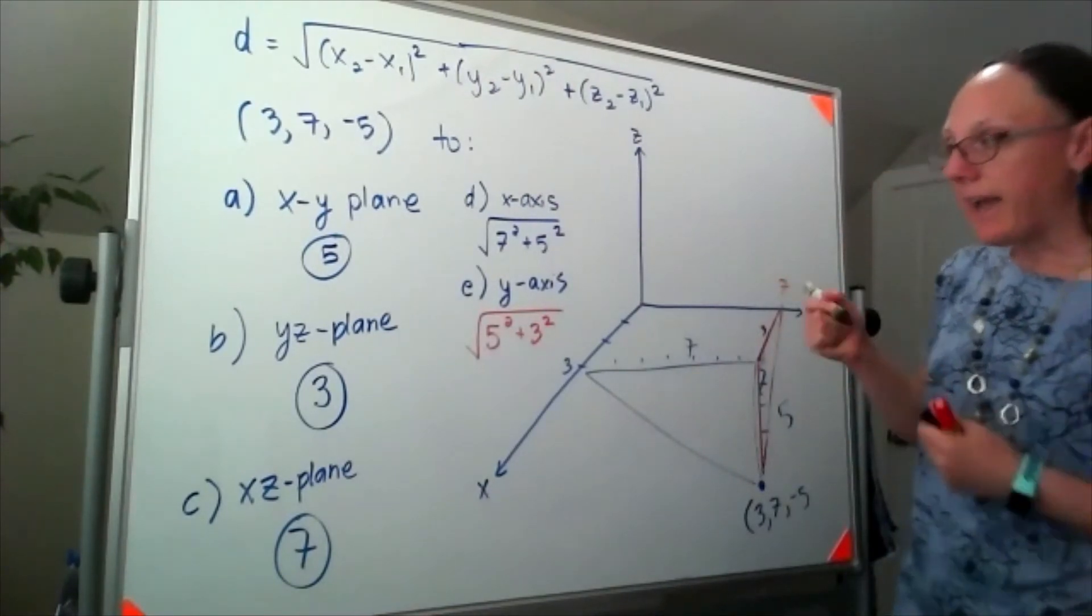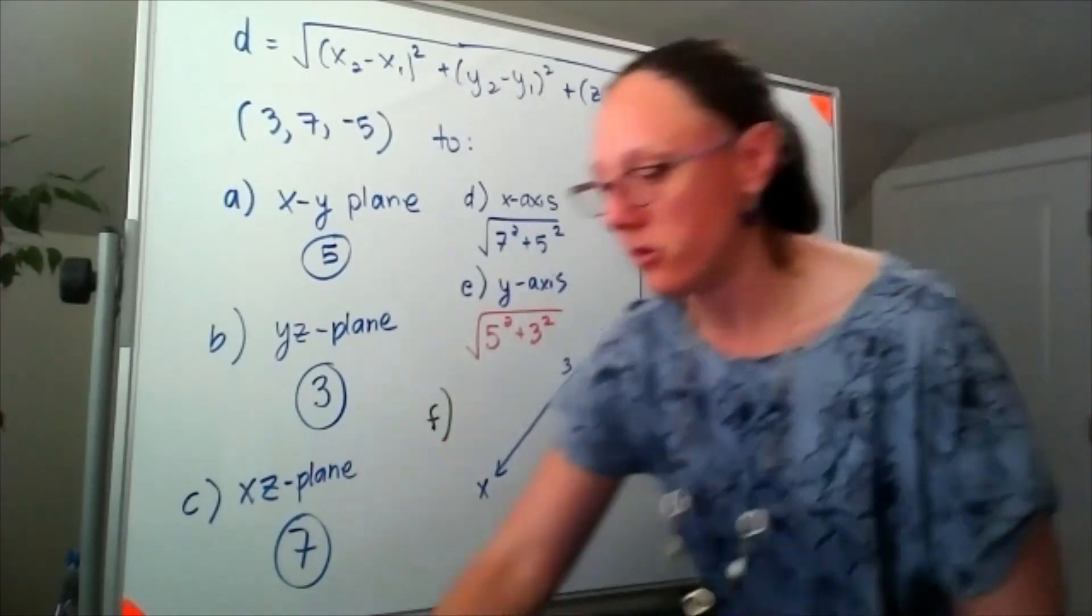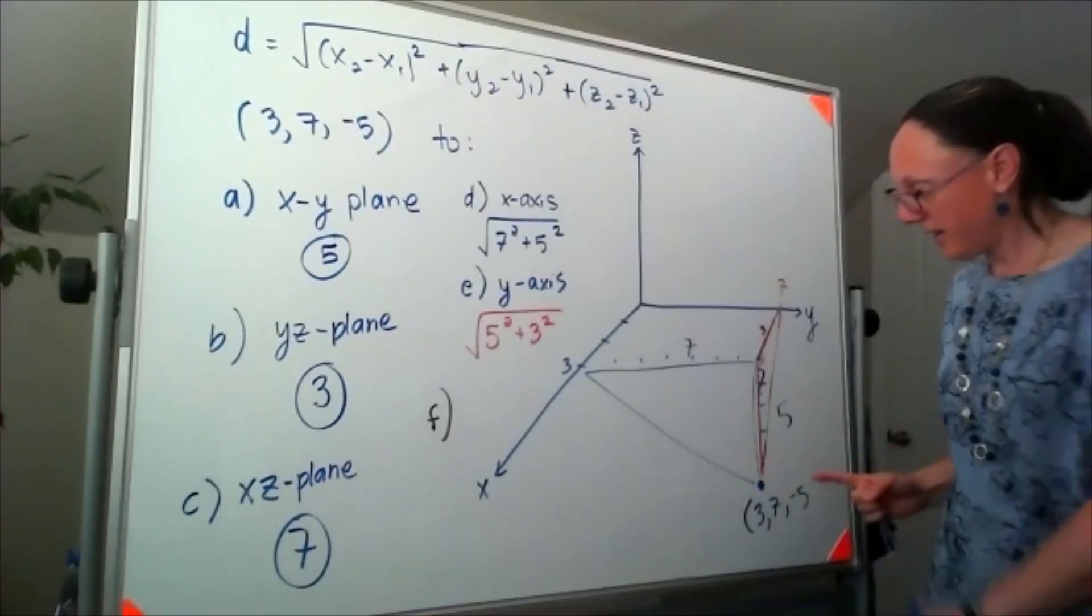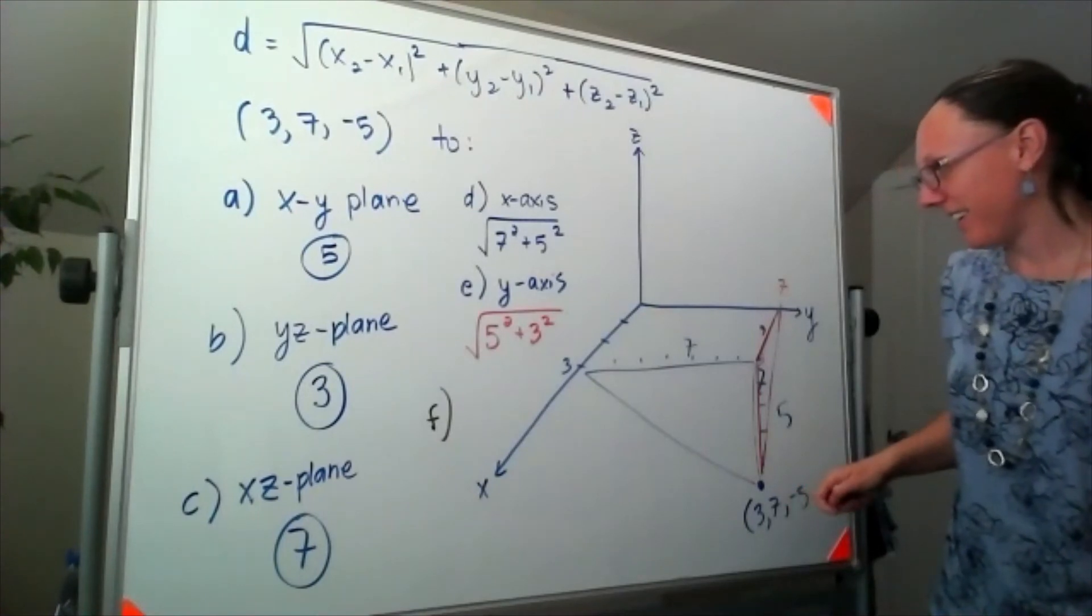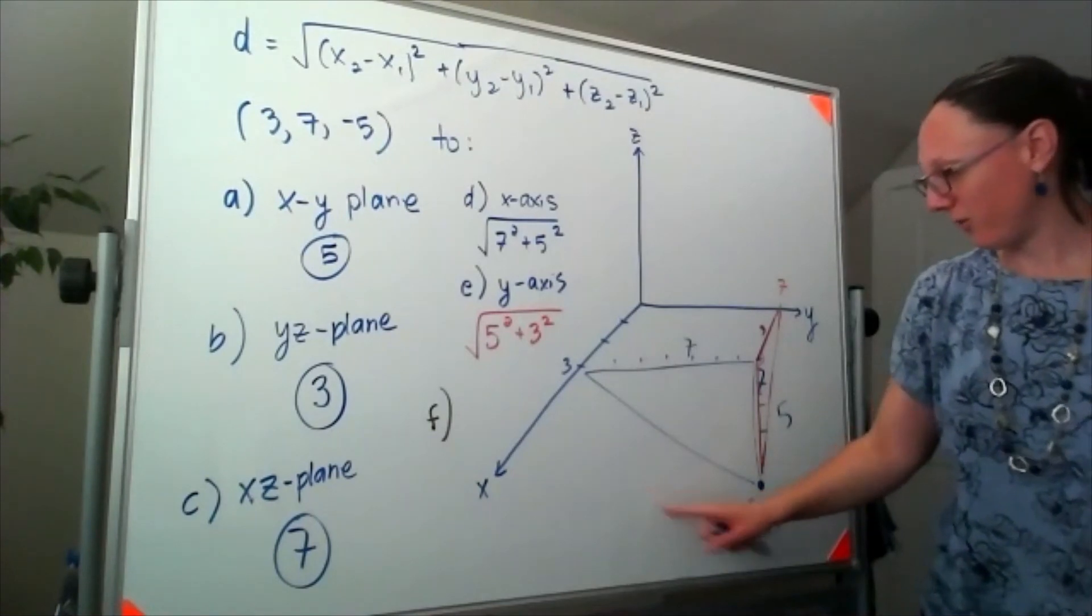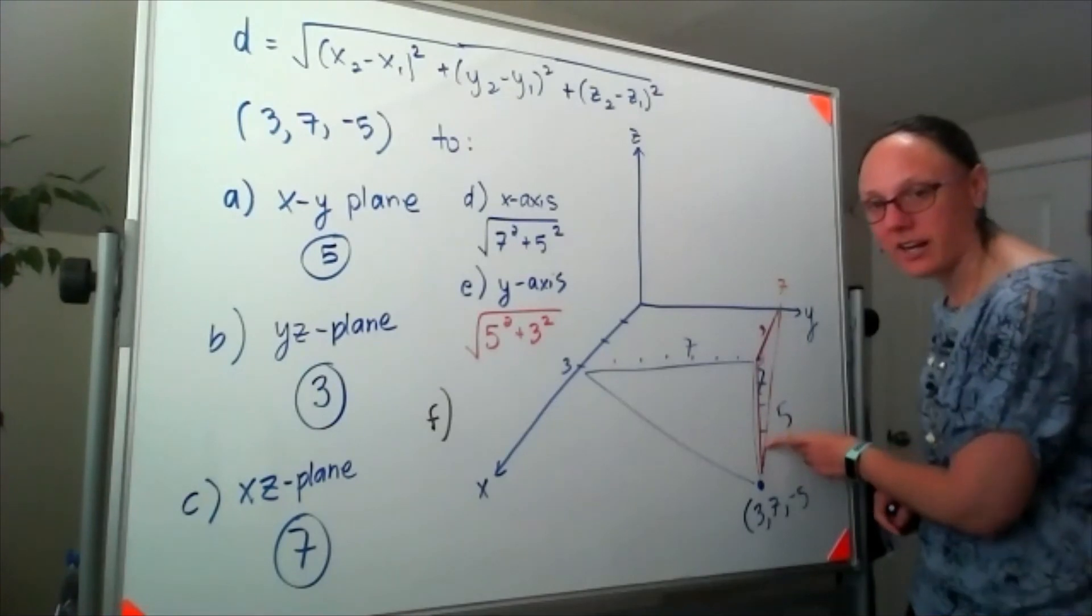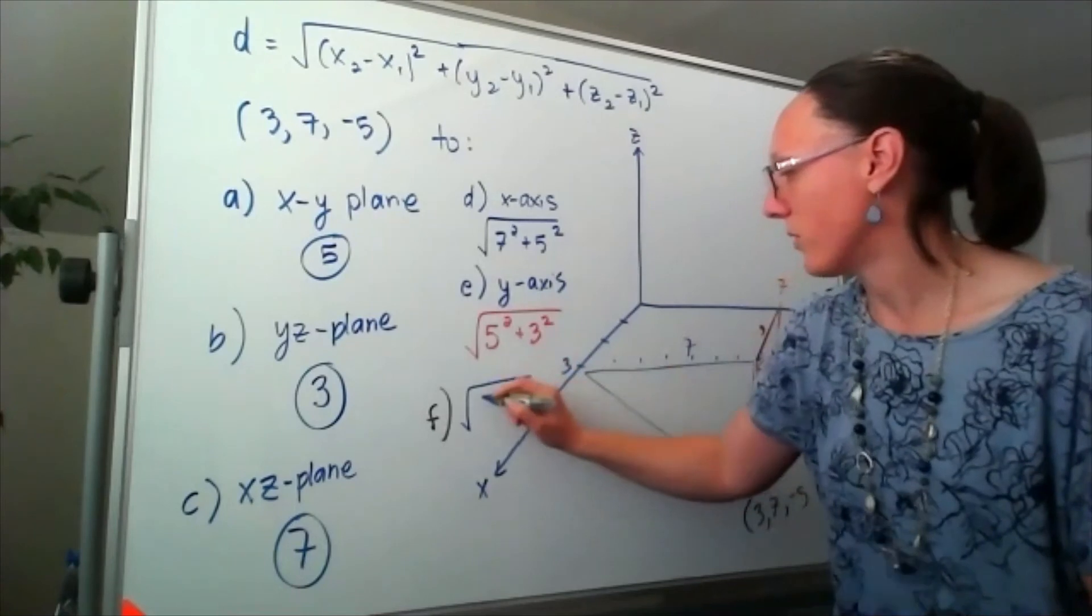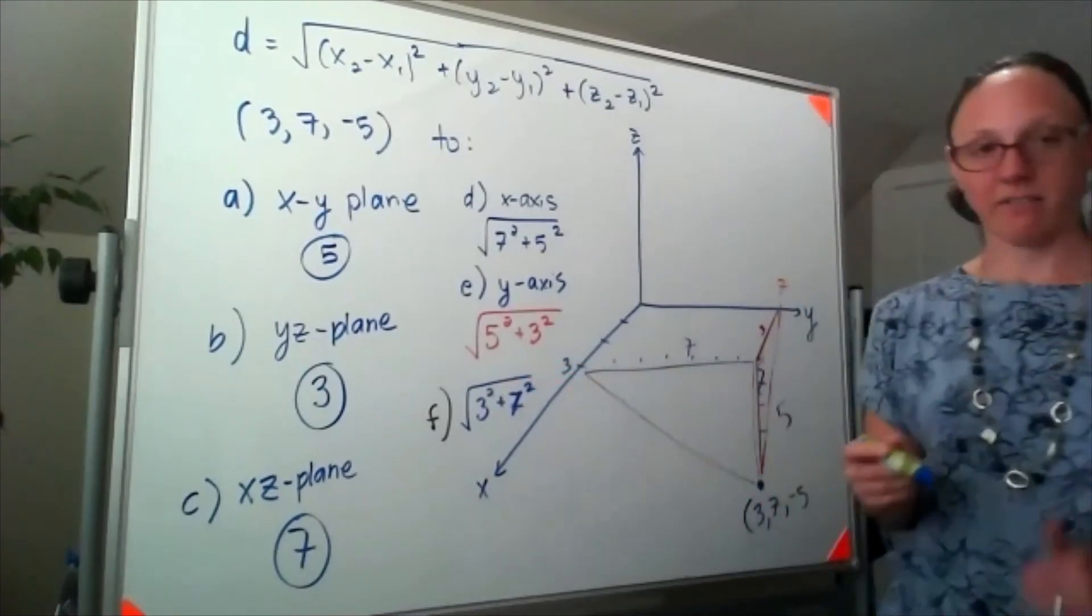And for f, the distance to the z axis, if I'm standing here and I have to get back to that corner - because I've got to get back to the z axis, I know that I've got to walk back my 3 in the x direction and my 7 in the y direction. So that distance would look like 3 squared plus 7 squared.